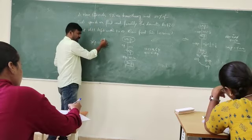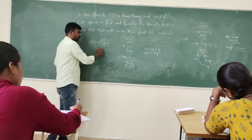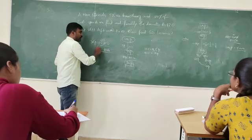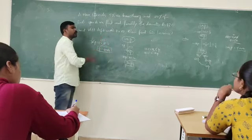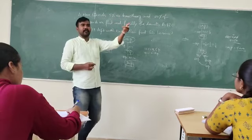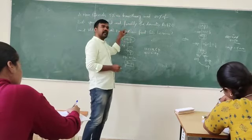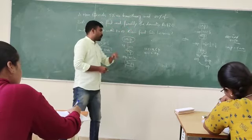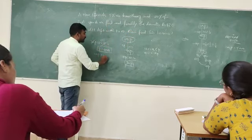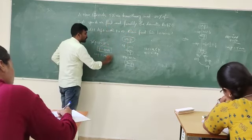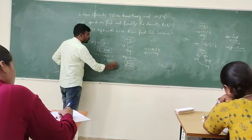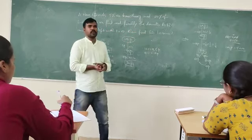One part equals to 20 rupees. To find his initial income, we need 100 parts. So 100 parts equals 100 into 20, which equals 2000. His initial income was Rs. 2000.